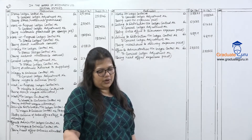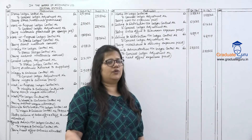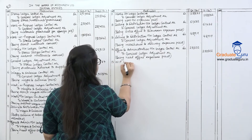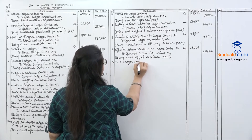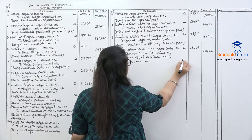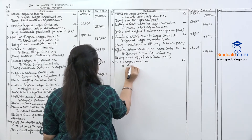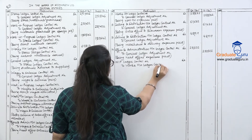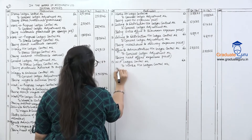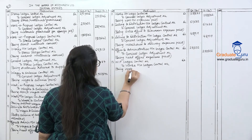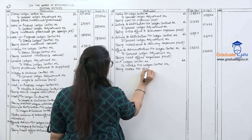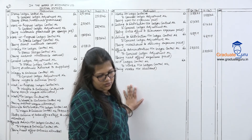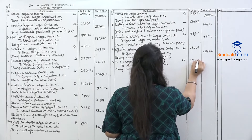Next, overheads absorbed into cost. Works overhead absorbed in WIP: journal entry is Work in Progress Ledger Control Account debit, to Works Overhead Ledger Control Account. Narration: being works overhead absorbed. Amount: 2,22,690.